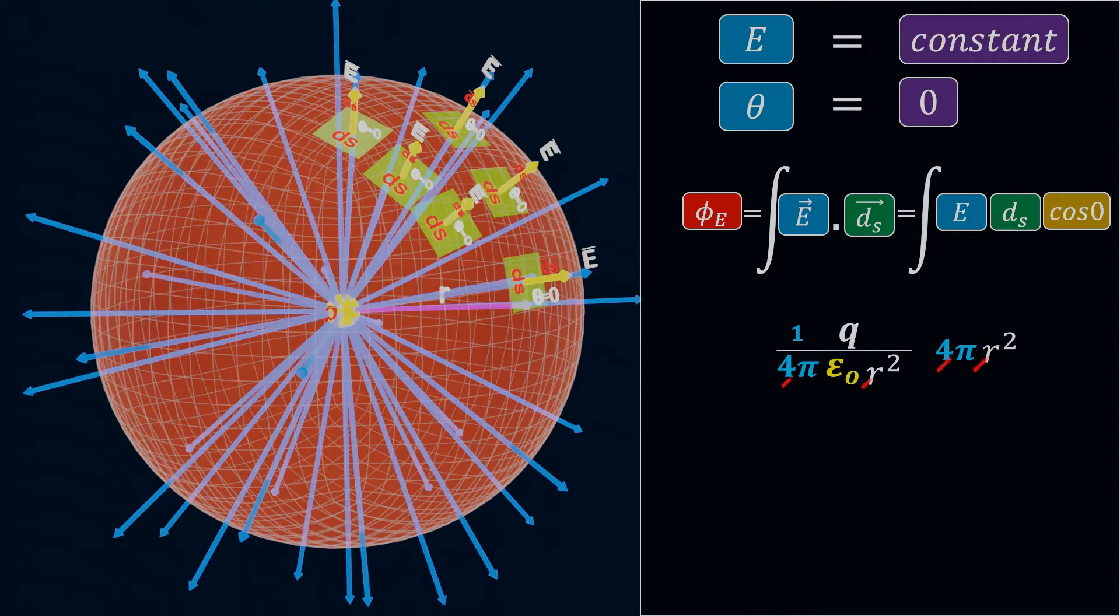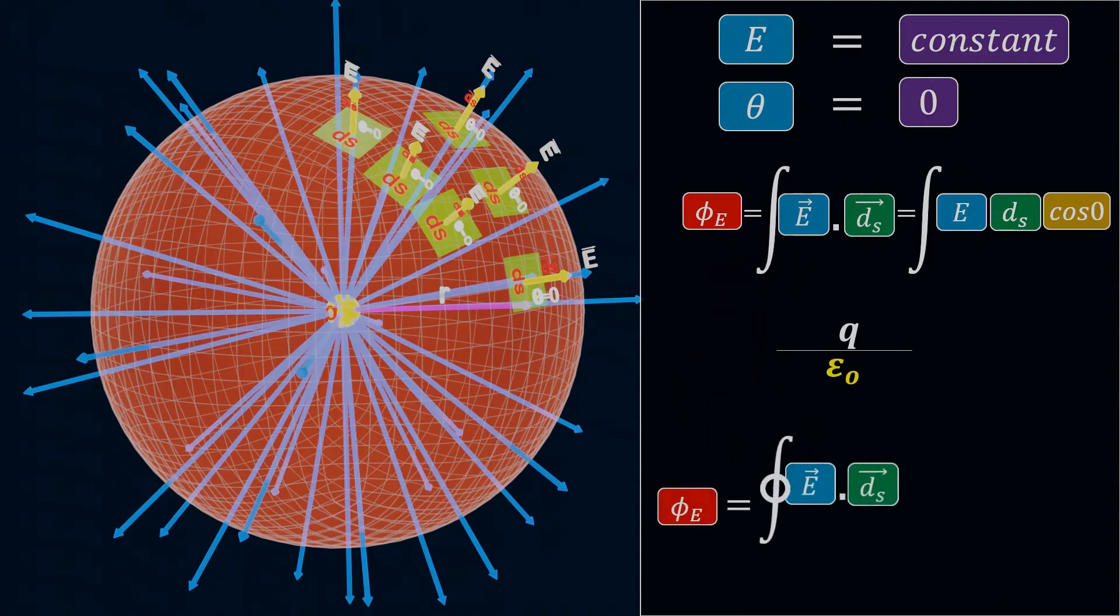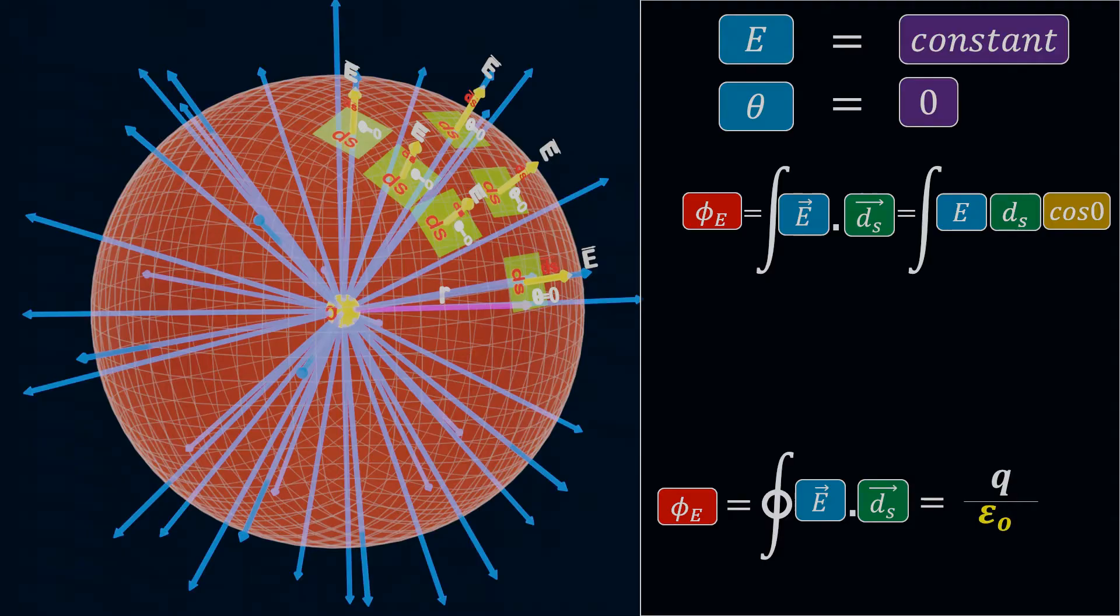Now the 4π and r² will cancel out. Hence, we obtain the result as the closed integral of E·dS being equal to Q divided by epsilon naught. Since we are performing integration over a closed surface, we represent it by placing a circle over the integration symbol.